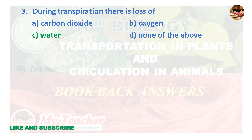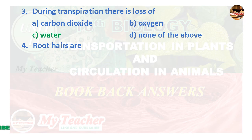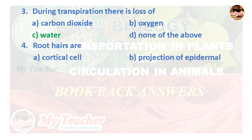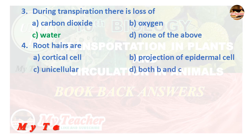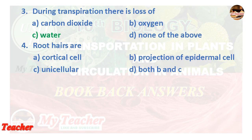Fourth question: Root hairs are — A. Cortical cell, B. Projection of epidermal cell, C. Unicellular, D. Both B and C. Answer is D. Both B and C.